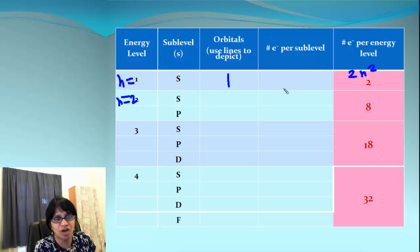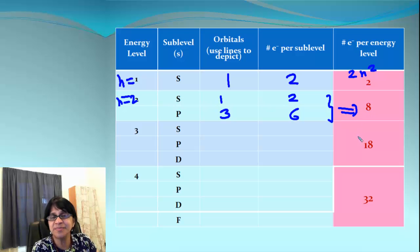So n equal to 1, we have s orbital, only 1 orbital, electrons are 2. Here n equal to 2, we get 1 s orbital, 3 p orbitals, electrons are 2 and 6. And look here, 2 plus 6 together we end up getting 8 electrons in the main principal level.